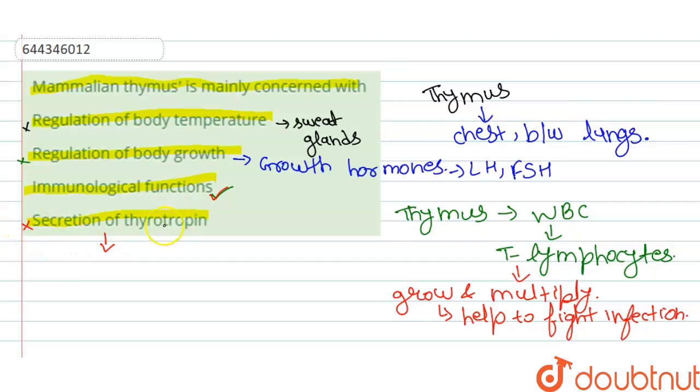This option is incorrect because thyrotropin is a precursor which stimulates thyroid gland to secrete thyroid hormone, which means this option is also incorrect. So the correct answer is option C: immunological functions. Thank you.